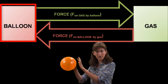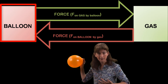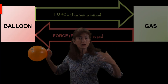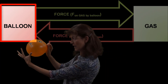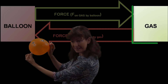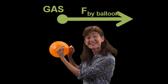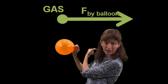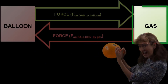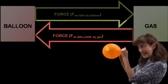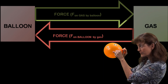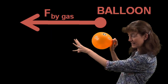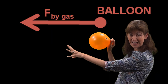Let's call the balloon wall body one and the gas that I've put into the balloon body two. When the balloon — body one — exerts a force onto the gas — body two — it accelerates that gas out the back of the balloon. But now that gas, being body two, exerts an equal but opposite force on body one, on the balloon, forcing the balloon in the opposite direction to the gas.